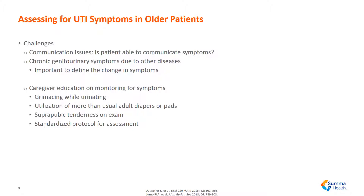Assessing for UTI symptoms in older patients can prove to be a challenge. There may be communication issues — is the patient able to communicate the symptoms? These older patients may have chronic genitourinary symptoms due to other disease states, so it's important to define the change in symptoms. Is there an increase in urinary frequency from baseline, an increase in hematuria, etc.? It's also important to give caregiver education on monitoring for these symptoms — is the patient grimacing while urinating, utilizing more adult diapers or bed pads, or having suprapubic tenderness on exam? Standardized protocols for assessment of these symptoms also exist.